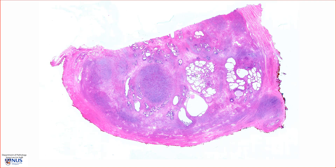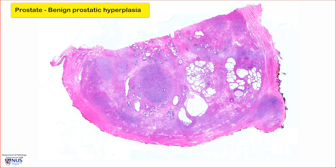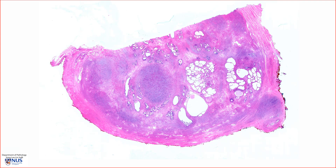Hello, this is a virtual microscopy slide of a case of benign prostatic hyperplasia or BPH. We are looking at the low magnification view of a section of the enlarged prostate gland, and we don't see the prostatic urethra in this section.